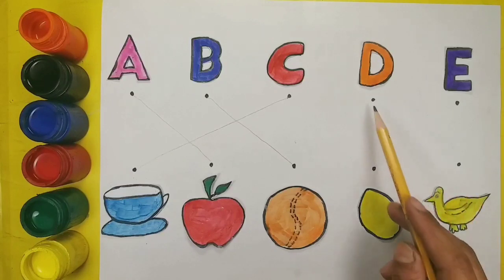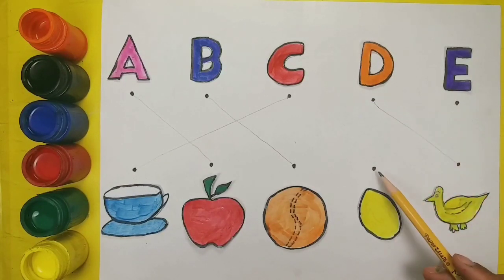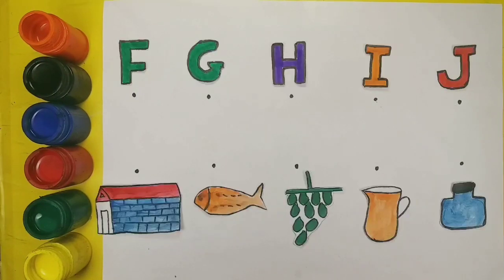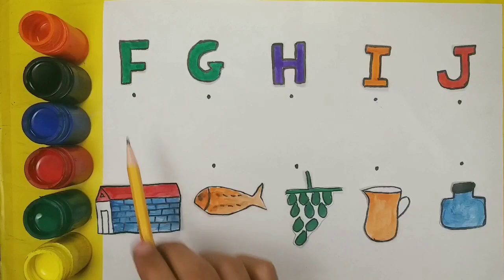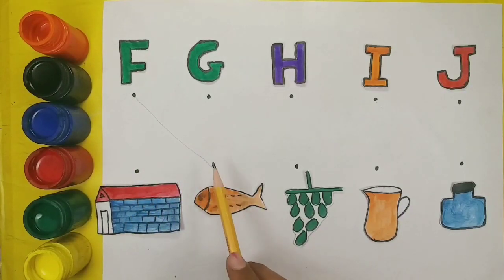D. D for duck. E. E for egg. F. F for fish.